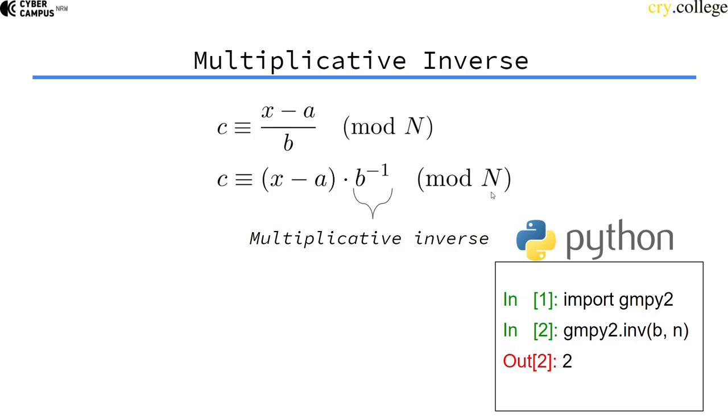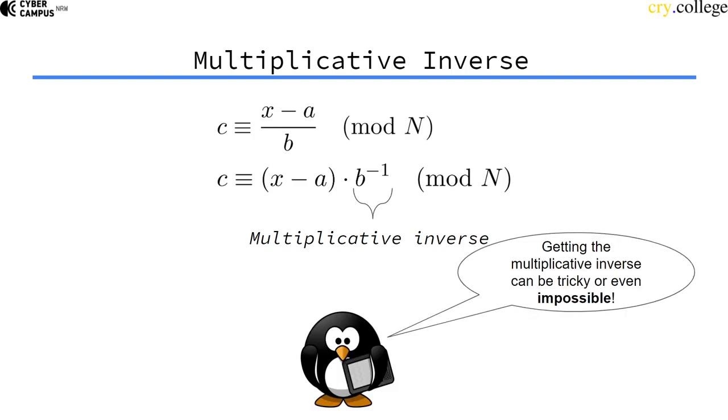Well, now you say, okay, just using my favorite Python library and it spits out something. Well, maybe it does, maybe it doesn't. Because getting a multiplicative inverse can be tricky and, in some cases, it's even impossible to do. So, in order to find out when it's impossible and why it can be tricky, we first need some more mathematical groundwork, some more mathematical concepts for us to understand how to invert and when it's possible.